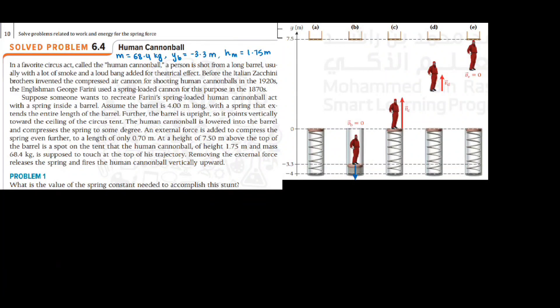In this video, we are going to discuss the human cannonball problem. The problem says that you have a spring inside a barrel which has a length of 4 meters, and you place a human cannonball of mass 68.4 kilograms on top of the spring. Then you lower the spring with the help of an external force to a height of 0.7 meter, such that the total compression in the spring becomes negative 3.3 meters.